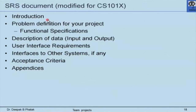In the SRS document, students must write an introduction, give a problem definition with functional specifications, describe what data they will handle including input and output, describe the user interface and interface to other systems, and specify the acceptance criteria — how they will confirm the software works correctly. They may also write appendices. Most students find this pretty daunting at the beginning but end up writing reasonably good documentation at the end.